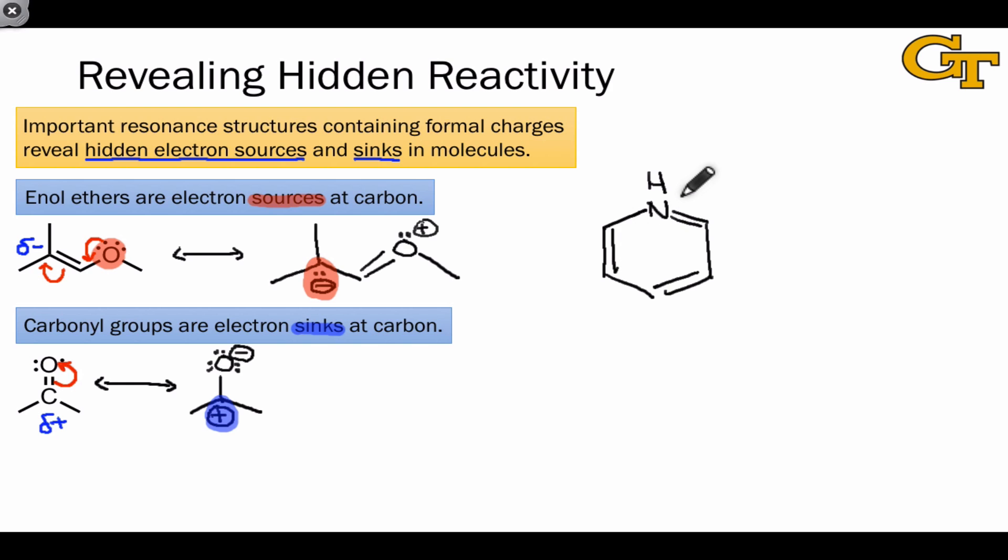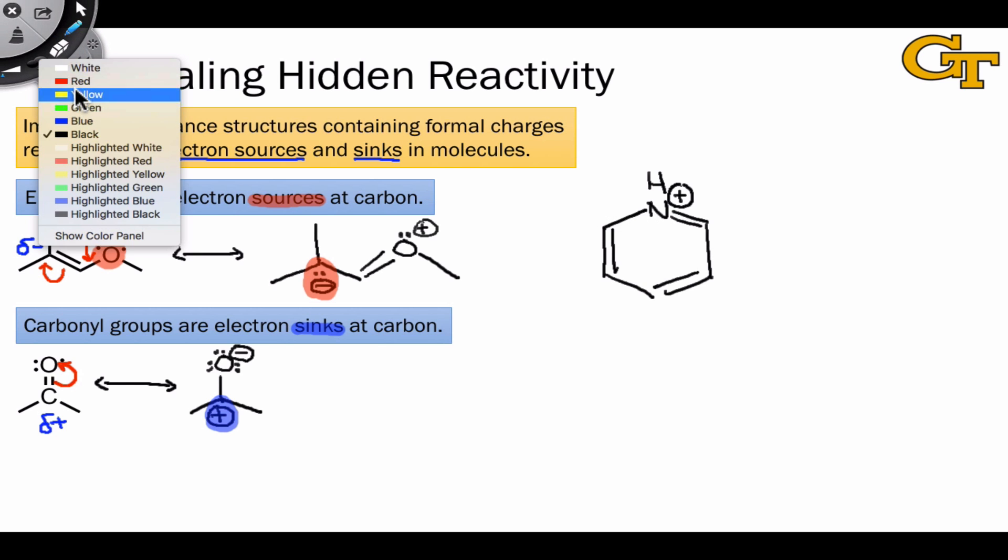For example, the structure I'm drawing here is called the pyridinium ion, and it looks based on this resonance structure like the nitrogen is a good electron sink because of its positive charge. That's certainly true, but there are other points of reactivity within this structure that we can see by drawing resonance structures.